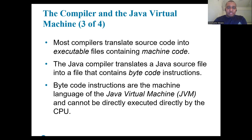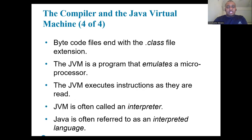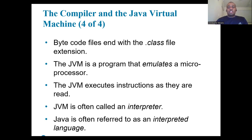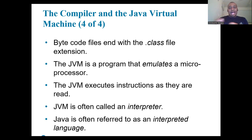Unlike other compilers that translate source code into machine code specific to a CPU, the Java compiler translates source code into bytecode. These bytecode files have a .class file extension.